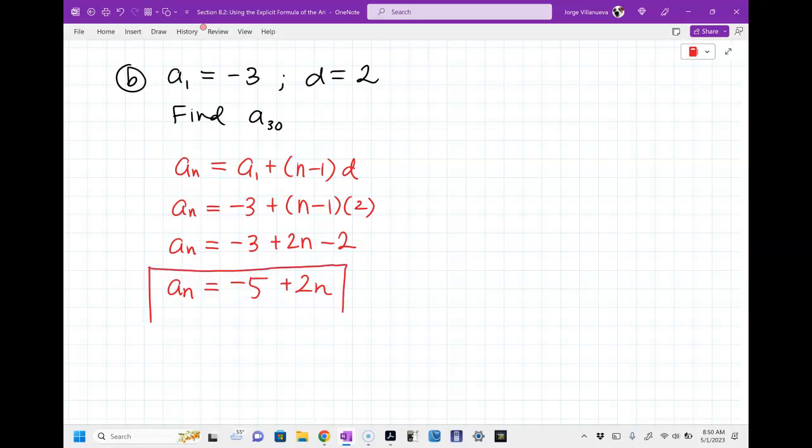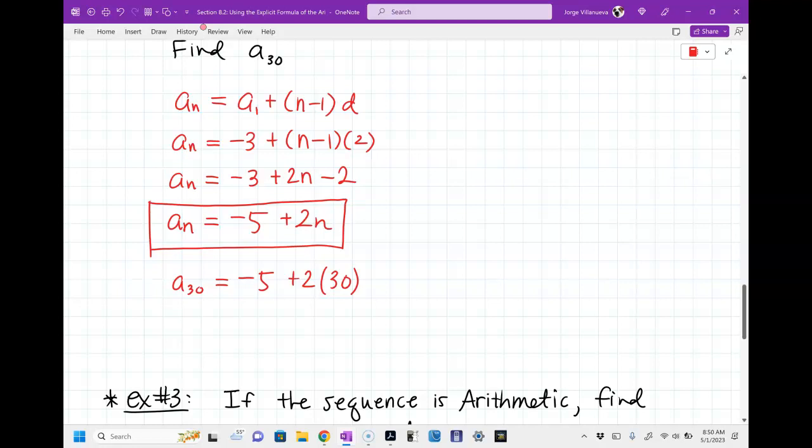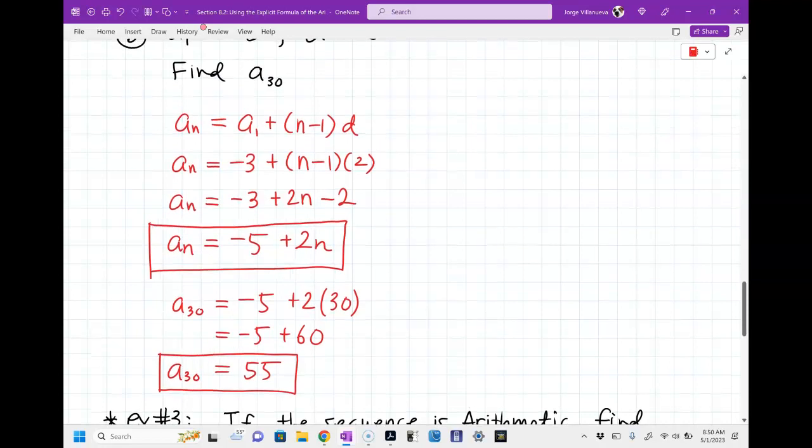So there's my explicit formula. You could have written 2n minus 5 and you're going to be correct. There's nothing wrong with that. Now, they want a sub 30. That means I've got to plug in a 30 into my equation. So 2 times 30 is 60. That's negative 5 plus 60. So that's 55. That's the 30th term.